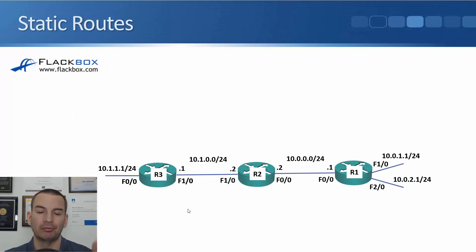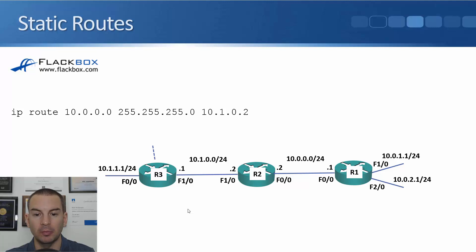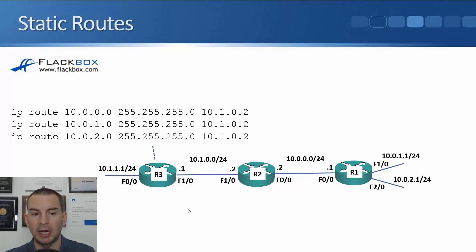Let's take it up a notch and add another router. It's the same topology as before, but I've added an additional router R3. R3 has got routes to 10.1.1 and the 10.1.0 network because it's directly connected to them. But right now it doesn't know how to get to 10.0.0 behind R2, and 10.0.1 and 10.0.2 which are behind R1, so I'm going to need to add routes to those networks. The route to get to 10.0.0 behind R2 would be IP route 10.0.0.0 255.255.255.0 with next hop 10.1.0.2 on router R2.